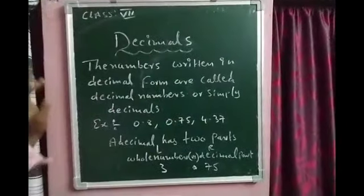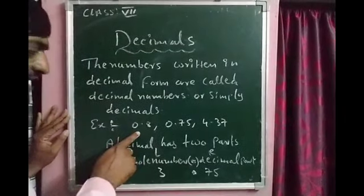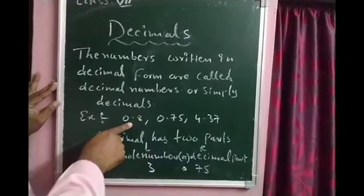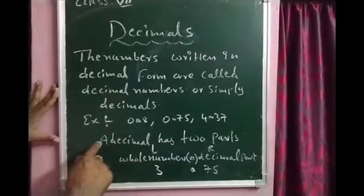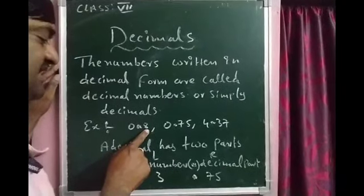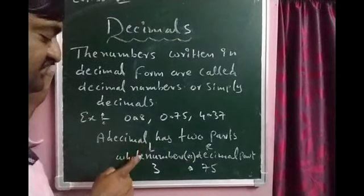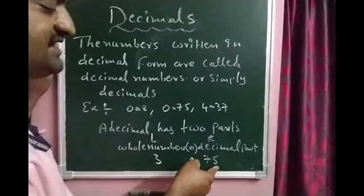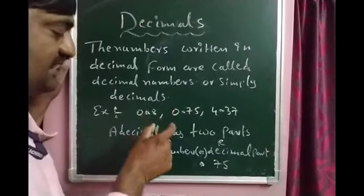Now we are going to learn decimals. The numbers written in decimal form are called decimal numbers or simply decimals. For example: 0.8, 0.75, 4.37 — these are all decimals. In decimals, we have two parts: the whole number part and the decimal part. These two parts are divided by a dot. The left side is the whole number part and the right side is the decimal part. In 3.75, 3 is the whole number part and 75 is the decimal part.